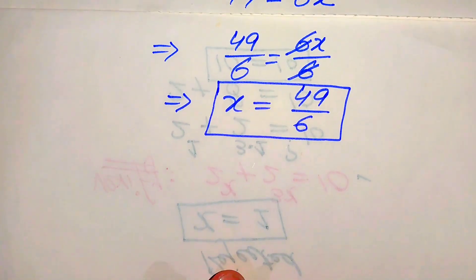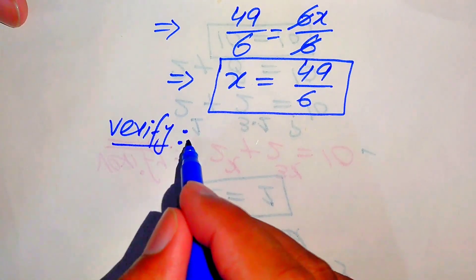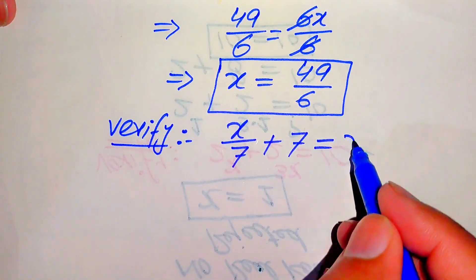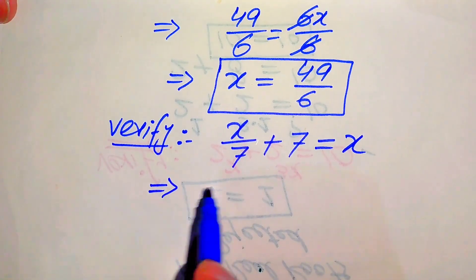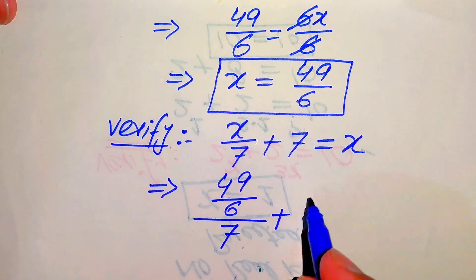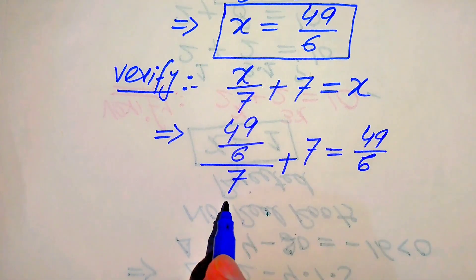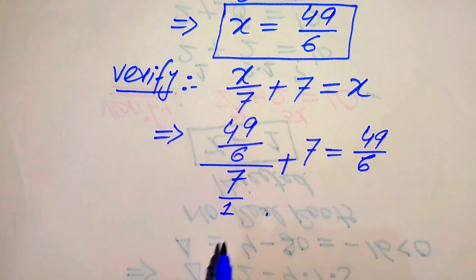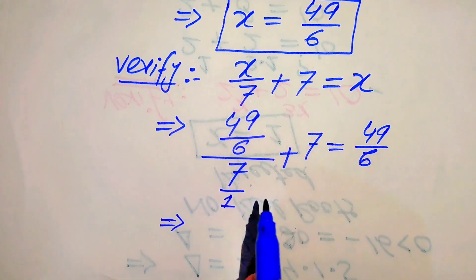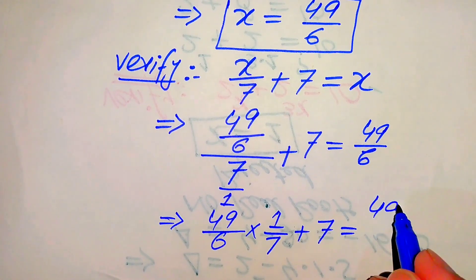Now we verify whether x equals 49 over 6 satisfies the given equation. We copy down the given statement: x over 7 plus 7 equals x. Substituting x equals 49 over 6 on both sides: 49 over 6 divided by 7, plus 7, equals 49 over 6. A fraction over a fraction means we multiply by the reciprocal, so this becomes 49 over 6 multiplied by 1 over 7, plus 7, equals 49 over 6.